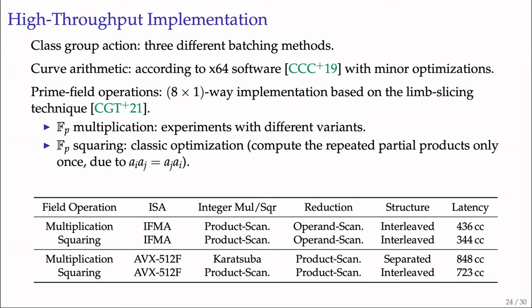For our high-throughput implementation, at the class group action layer, we take advantage of three different batching methods. For curve arithmetic, we developed them according to x64 software with minor optimizations. For prime field operations, we developed eight-times-one-way implementation according to the limb slicing technique. For field multiplication, we developed many variants and selected the fastest one. We developed a dedicated squaring based on classic optimization technique, computing repeated partial products only once. Since the vector multiplier of AVX-512F and IFMA are different, the implementation of field operations in these versions are quite different.